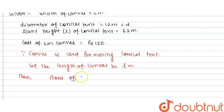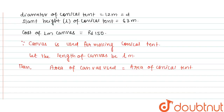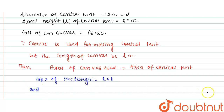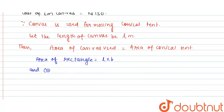We equate the area of canvas with the area of the conical tent. The formula for area of canvas is area of rectangle = length × breadth. And the curved surface area of cone (CSA of cone) = π r l.